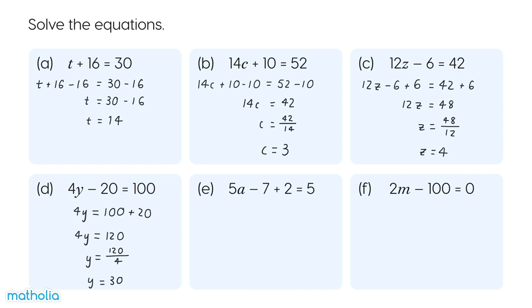E. 5A minus 7 plus 2 equals 5. Subtract 2 from both sides. 5A minus 7 equals 3. Add 7 to both sides. 5A equals 10. Divide both sides by 5. A equals 2. We have solved the equation.